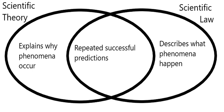Laws are narrower in scope than scientific theories, which may contain one or several laws. Science distinguishes a law or theory from facts. Calling a law a fact is ambiguous, an overstatement, or an equivocation.